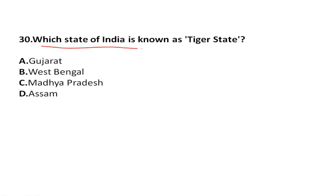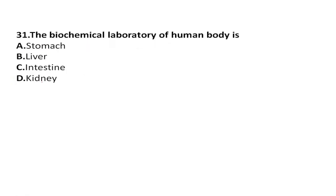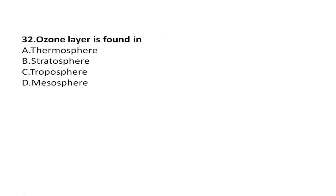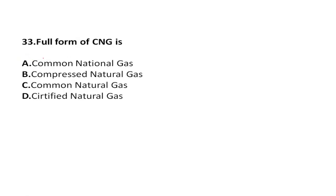Which state of India is known as the Tiger State? It is Madhya Pradesh — Madhya Pradesh is called the Tiger State of India. The biochemical laboratory of the human body is the liver. The ozone layer is found in the stratosphere. The full form of CNG is Compressed Natural Gas.